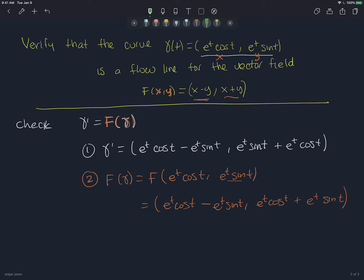This part is exactly this. And this part is exactly this. It's backwards, but it's the same thing. So since we got that gamma prime equals f of gamma, then it is a flow line.